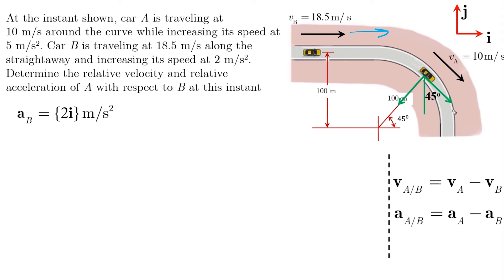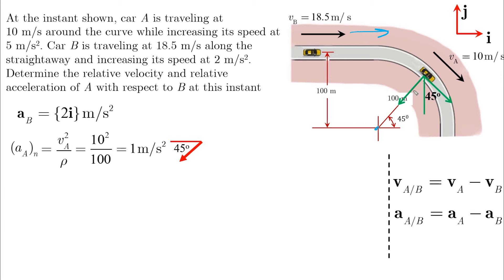For car A, it has two components of acceleration because it's moving within a curve. It has the normal component, which is V squared over R, directed towards the center at 45 degrees from the horizontal. It is also increasing its speed, so the tangential acceleration is in the same direction as the velocity, given as 5 meters per second squared. The normal acceleration has negative I and negative J components, while the tangential acceleration has positive I and negative J components.